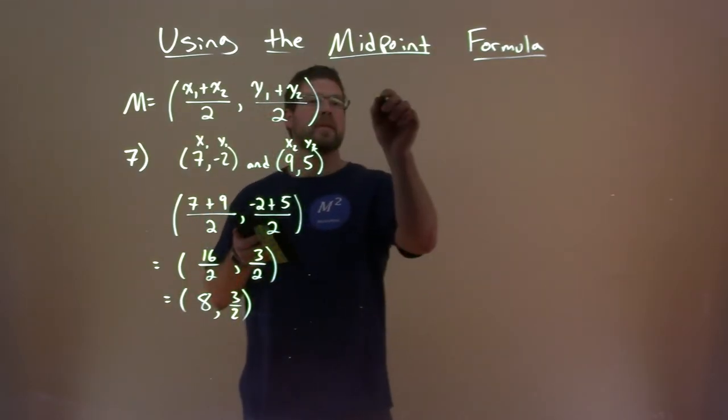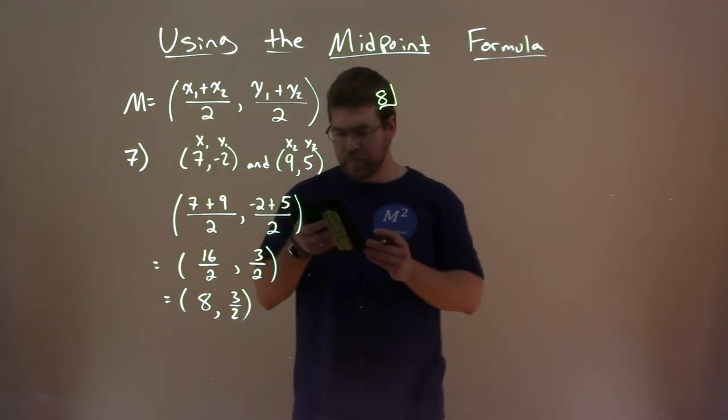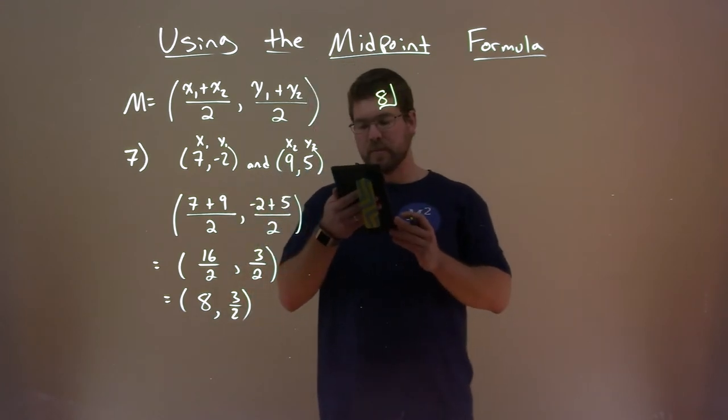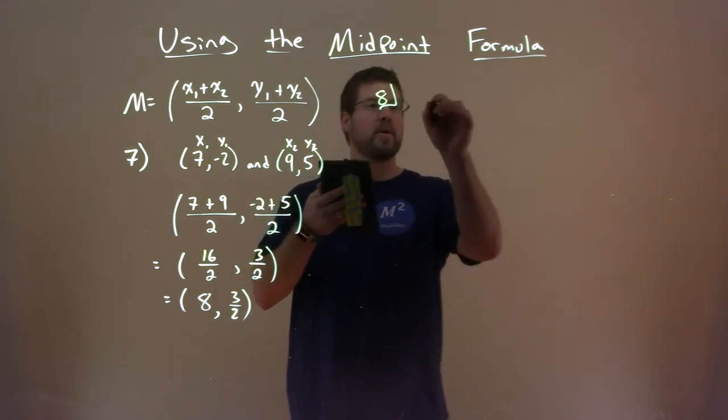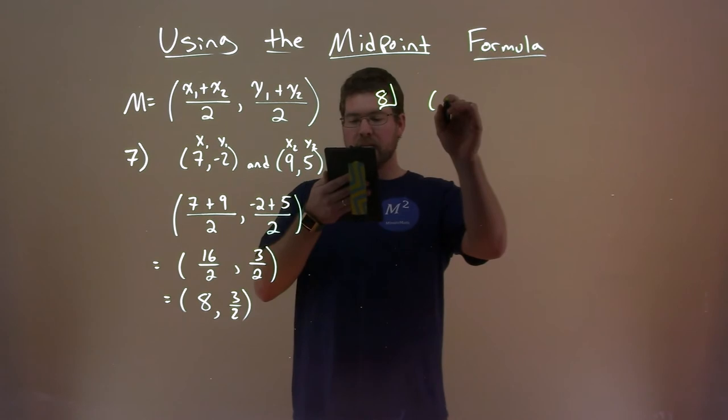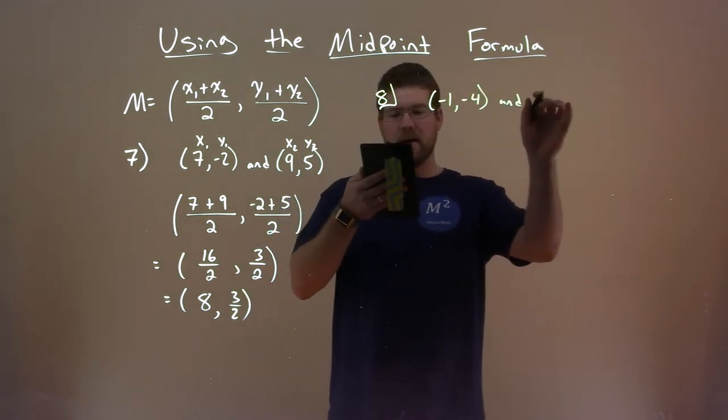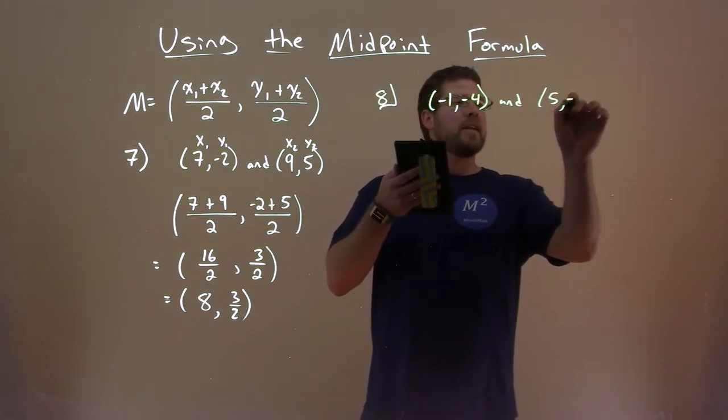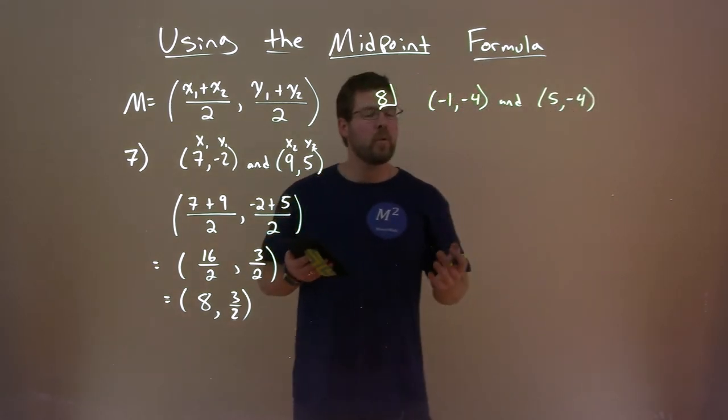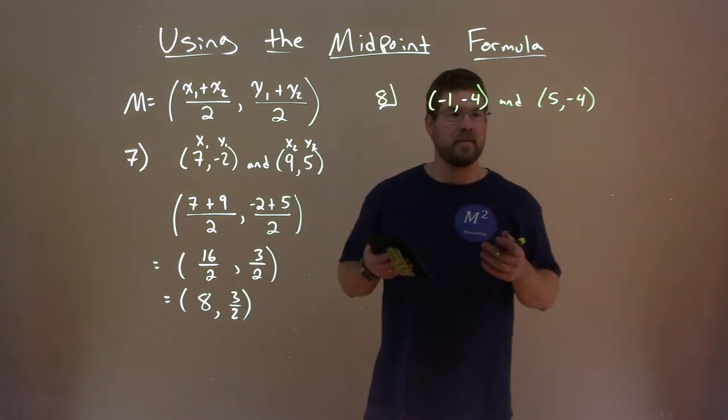Let's do another one here, number 8. Let's say we're given a circle and we're going to find the center of the circle. The circle has a diameter with endpoints negative 1, comma negative 4, and 5, negative 4. We can use the midpoint formula there to find the center of the circle.